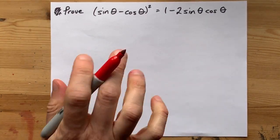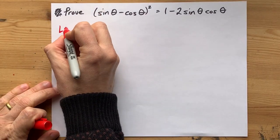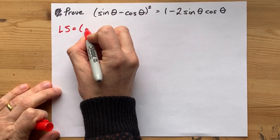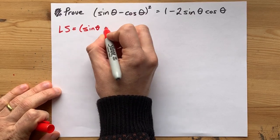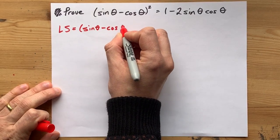Sometimes trig identities can look complicated, but then when you actually try to deconstruct them, they end up seeming pretty easy. Here is an example.